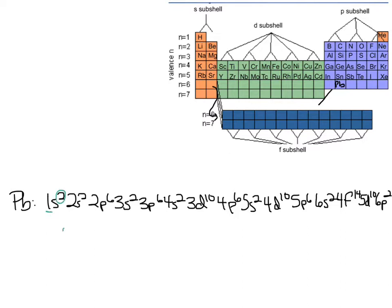In the first shell, there's only a 1 here so there are 2 electrons. In the second shell, here's a 2 and here's a 2 — adding those exponents gives 2 plus 6 equals 8. For the third shell, wherever there's a 3: here's a 3, here's a 3, here's a 3 — adding gives 18. For the fourth shell, be careful because there's more than one place: 4s2, 4p6, 4d10, and 4f14 — those add up to 32.